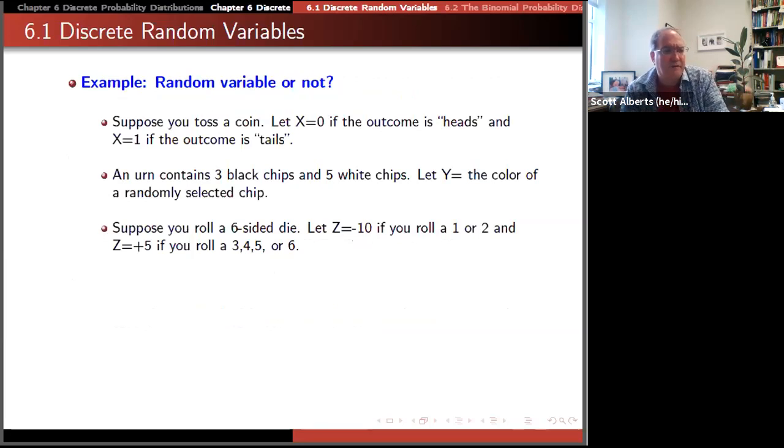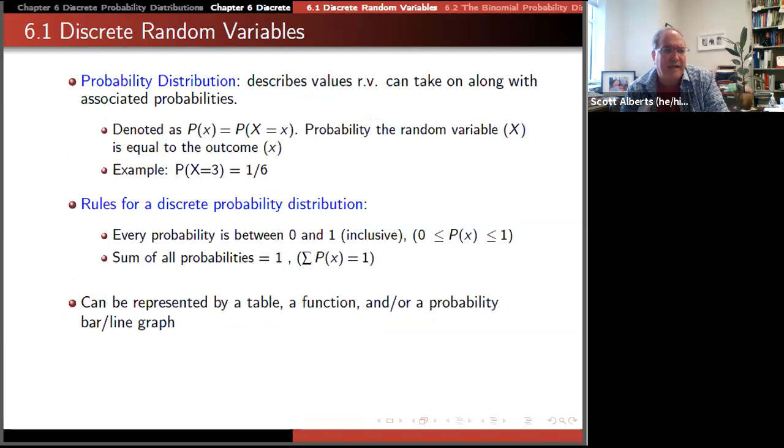We're going to take those and make a probability distribution. We're going to use this notation here that says the probability of x is equal to the probability of X equals x. You can see how the big and small x's are sort of used. The capital X is used to mean the variable and then the little x,